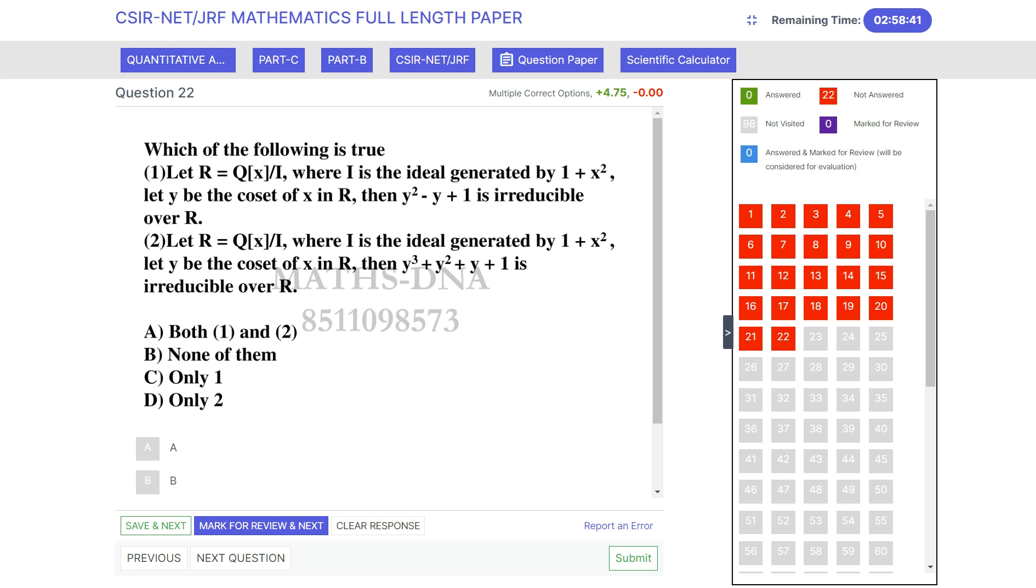The question is, which of the following is true? Two statements are given to us. The first one: let R = Q[x]/I, where I is the ideal generated by 1 + x², and let y be the coset of x in R, then y² - y + 1 is irreducible over R.